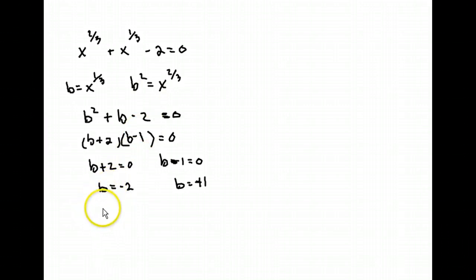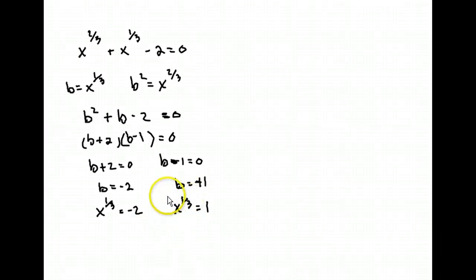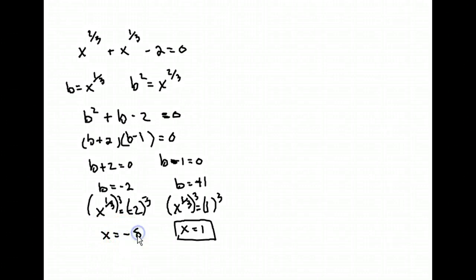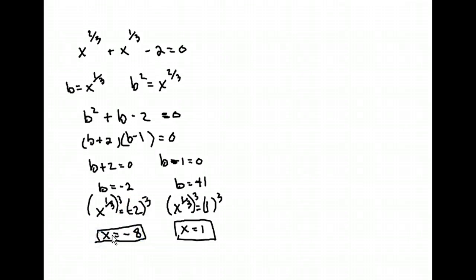But that's not the final answer, because b equals x to the 1/3. So x to the 1/3 equals negative 2, and x to the 1/3 equals 1. For the second one, raise both sides to the third power: x equals 1. For the first one, raise to the third power: negative 2 cubed gives x equals negative 8, because negative 2 times negative 2 is positive 4, times another negative 2 is negative 8. So your two answers are negative 8 and positive 1.